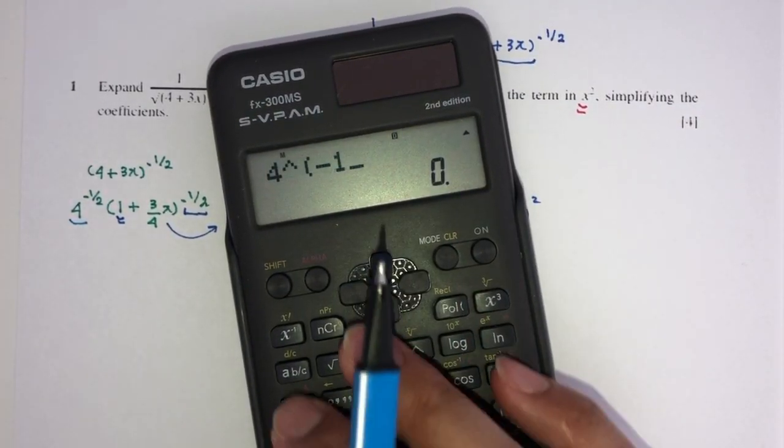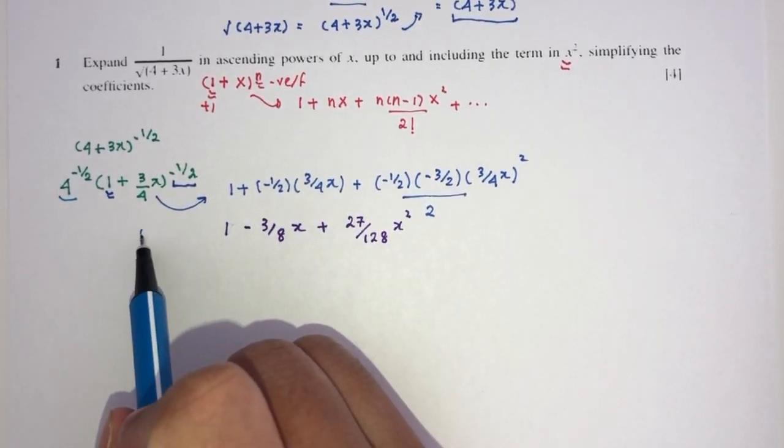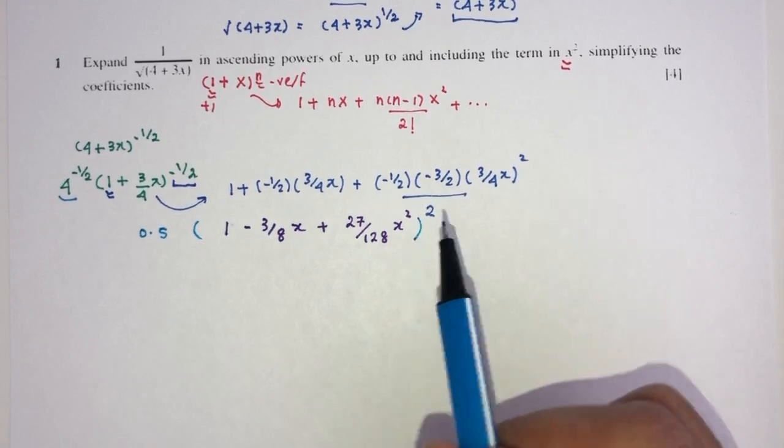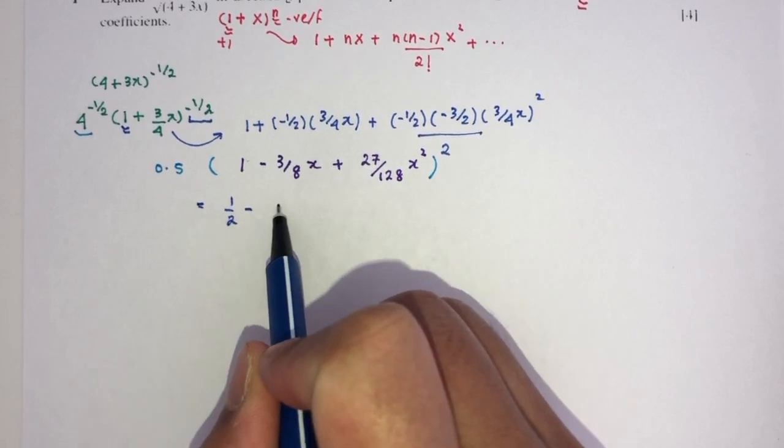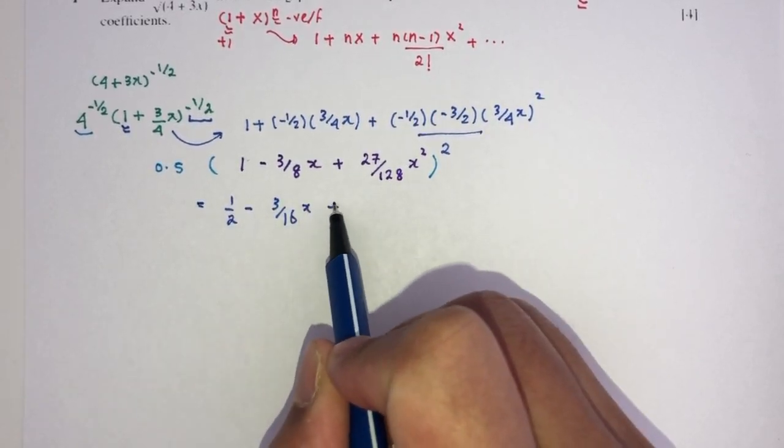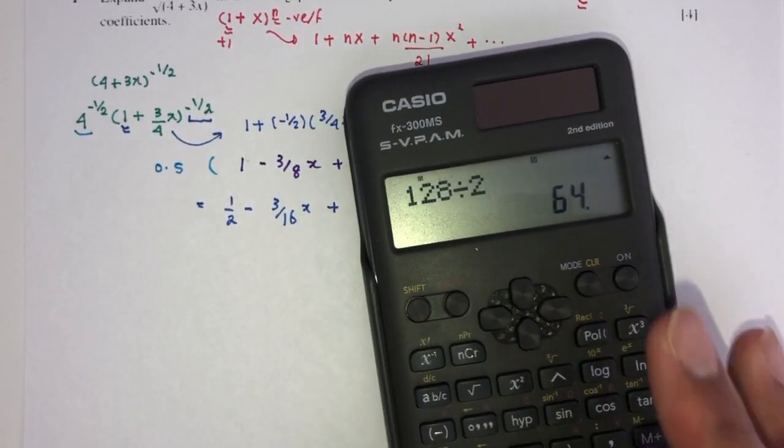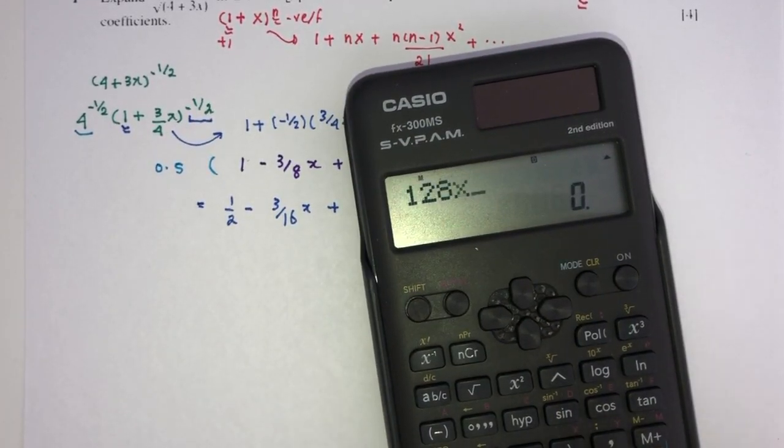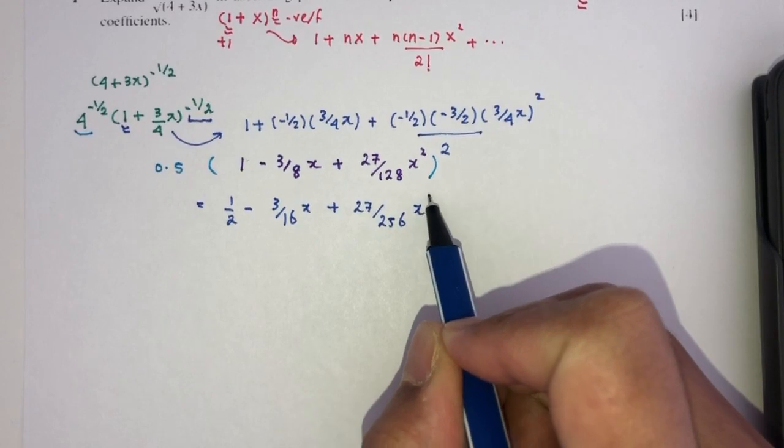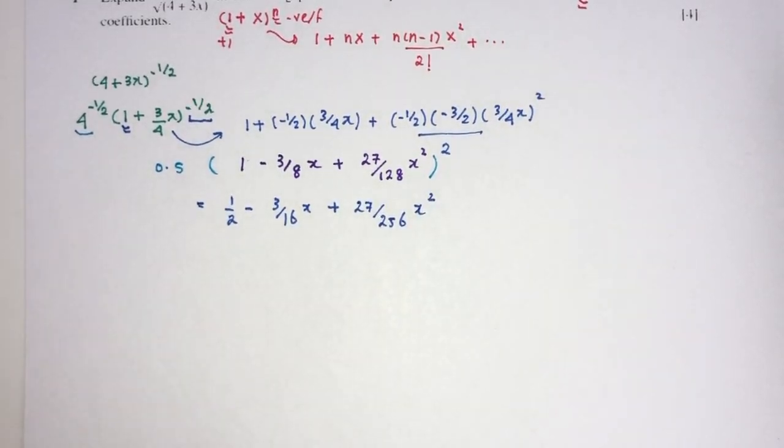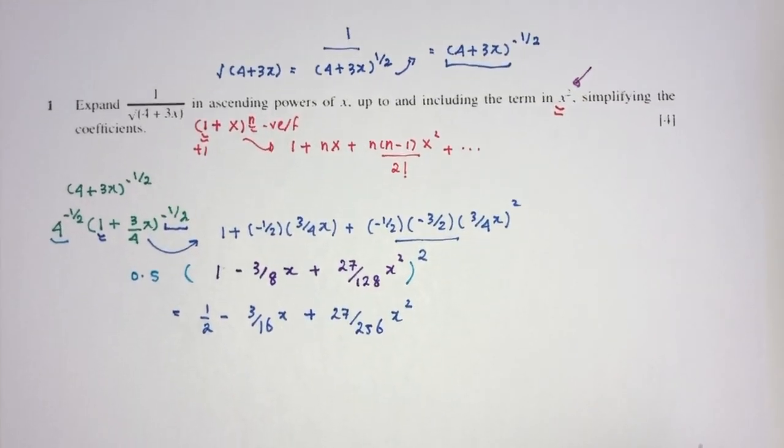4 power minus half is just 0.5. So 0.5 multiply this whole thing, let's see what we get. It becomes half minus 3 over 16x, and plus 27 over 256x squared. Here you go, you have it. This will be the expansion of this whole thing up to x squared. And that is your question number 1.